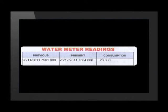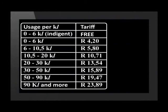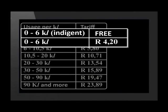Let's now take a look at the water consumption tariff table. Notice that the table has two rates listed for 6 kL — notice the indigent label in brackets. It is important that you read this table correctly when doing any calculations.